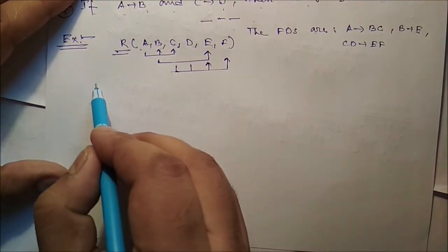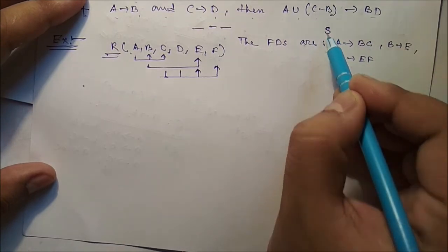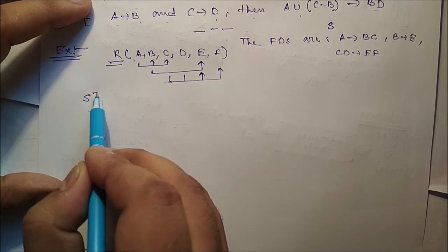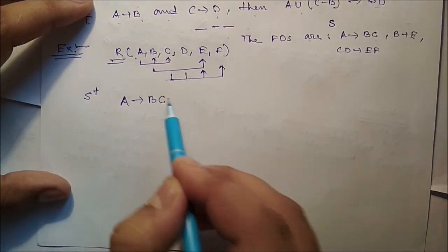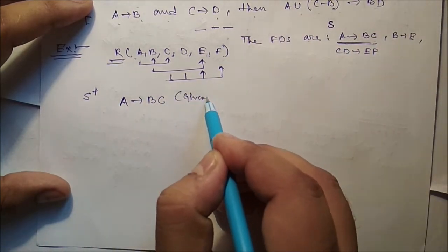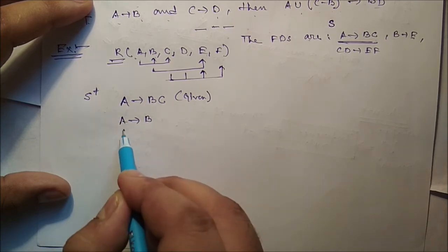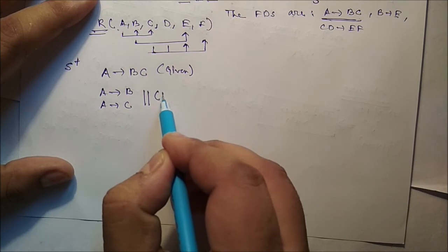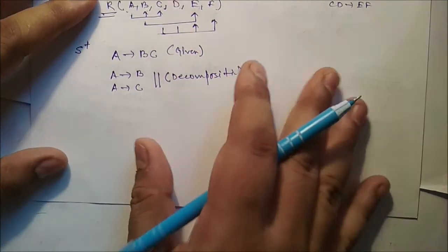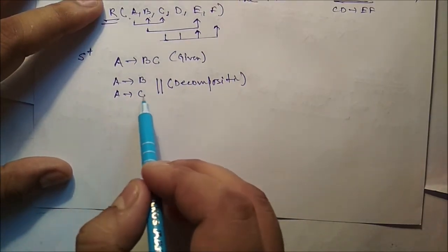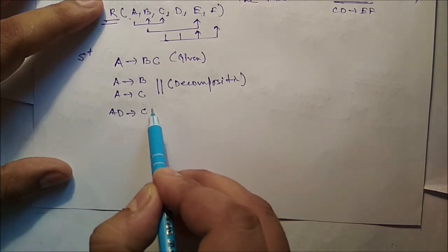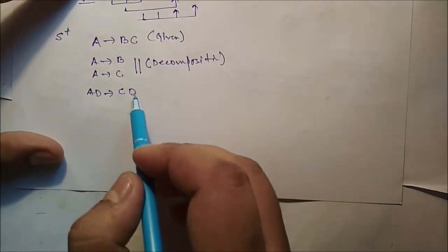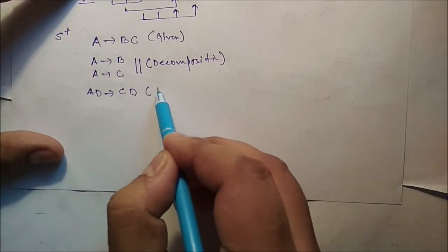Using the inference rules we can identify the closure S+. From A→BC, by decomposition we get A→B and A→C. By augmentation on A→C, adding D to both sides: AD→CD. By augmentation on A→B, adding C: AC→BC. Adding D to A→B gives AD→BD — all by augmentation.